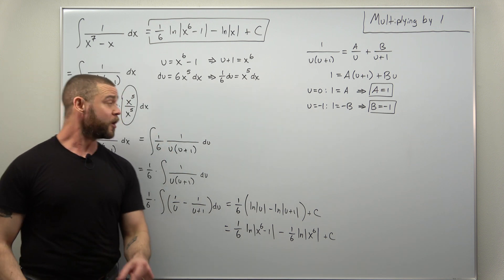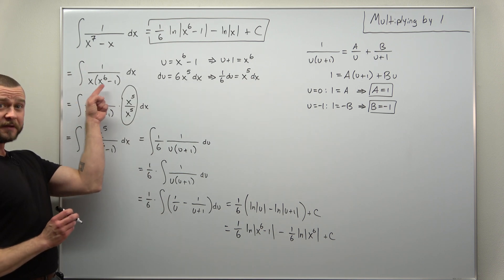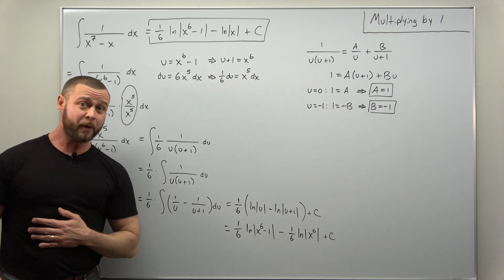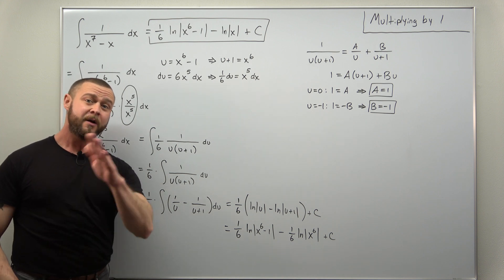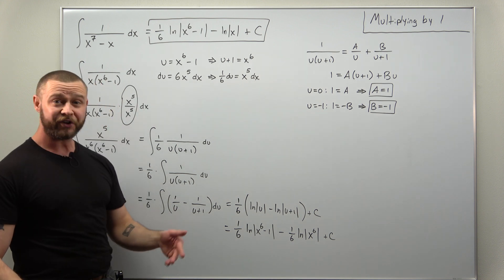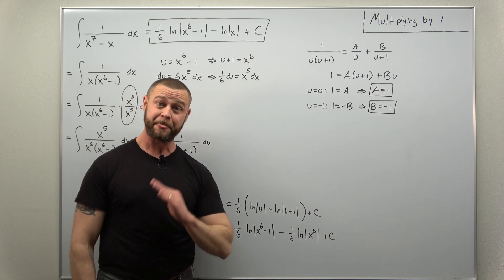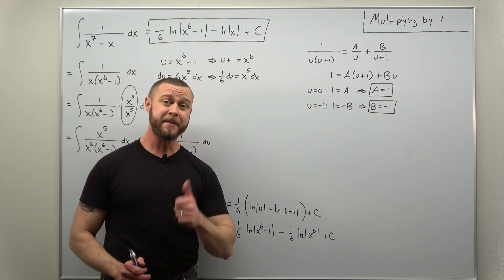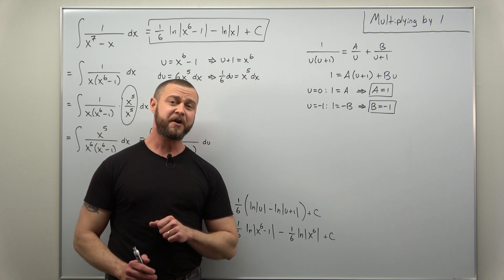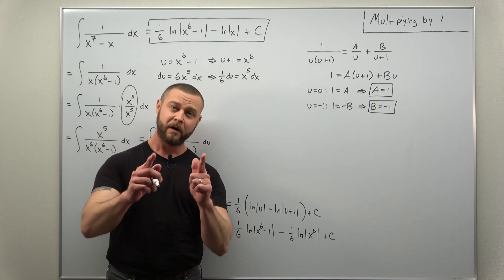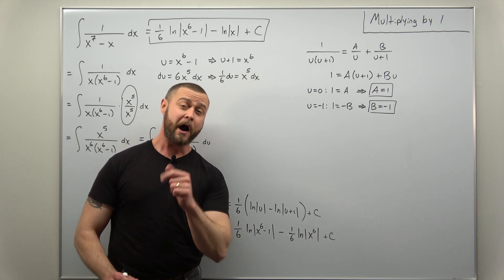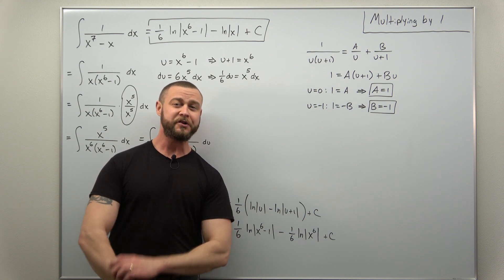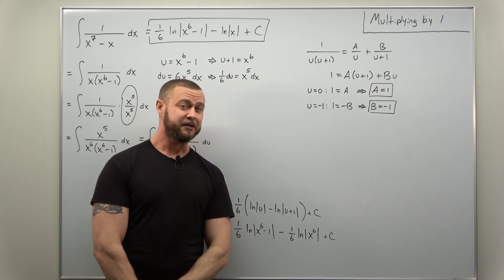If we were to fully factor x⁶ minus one and go through a partial fraction decomposition, we probably wouldn't even be done solving for the constants. So a simple algebraic trick is all that we need. Hope you enjoyed the video and I hope you're enjoying the Art of Integration — if you are, support the channel, like and subscribe.